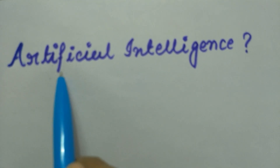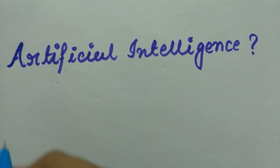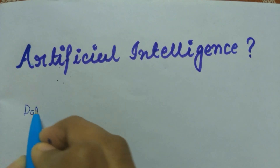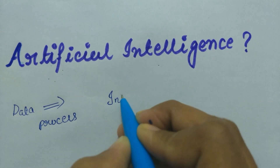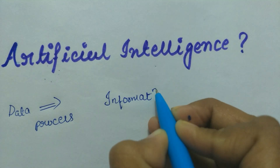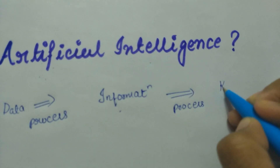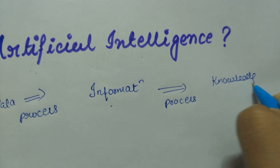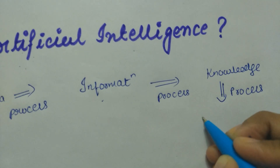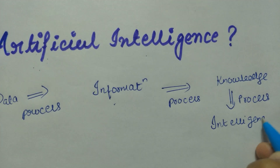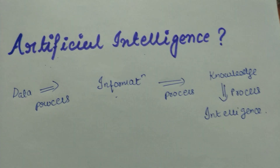Artificial is basically a copy of something natural. And what does intelligence mean? When you take data and process it, it becomes information. When you process this information, it becomes knowledge. And when you process this knowledge, it becomes intelligence.